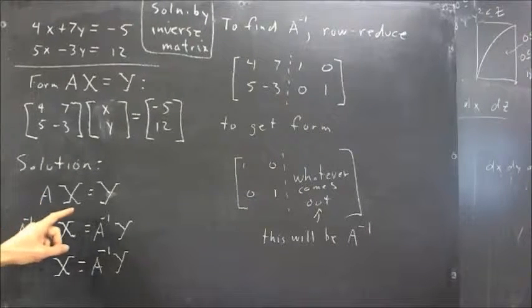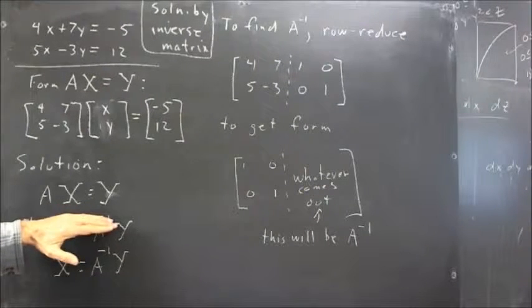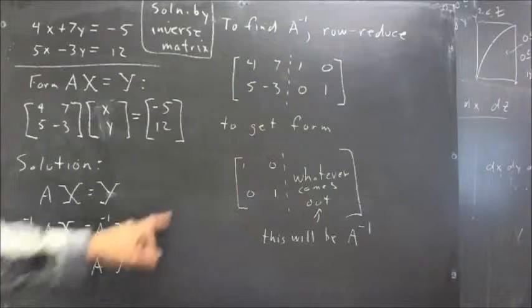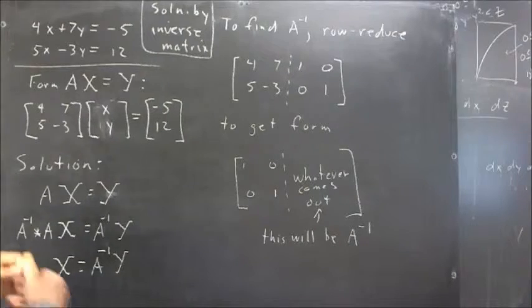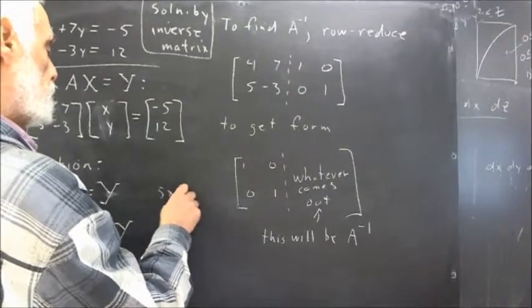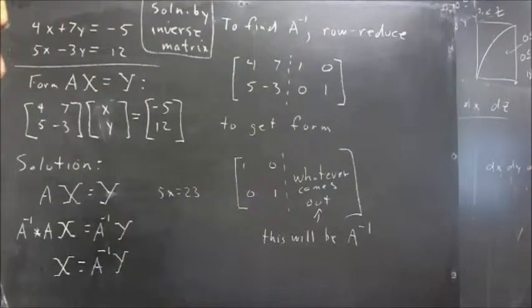So, we have an equation of form AX equals Y. How would you ordinarily solve an equation AX equals Y? I'm going to just write an equation, like 5X equals 23. How would you solve that equation? Well, you would divide by 5.